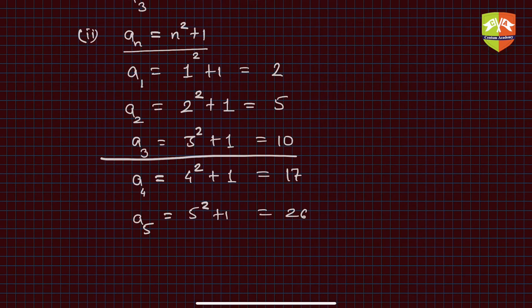The difference of 5 and 2 is 3, difference of 10 and 5 is 5, difference of 17 and 10 is 7, and this difference is 9. So you can see the first level of difference is not constant. Let's go for the second level.